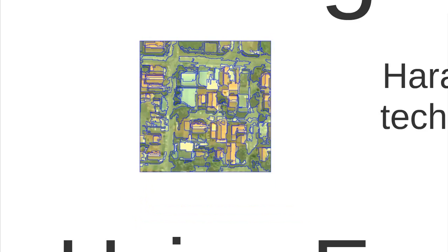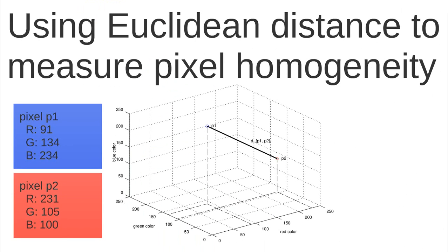And how do we do this using the region growing approach? One of the possible ways to compute the region growing approach is to use the Euclidean distance to measure pixel homogeneity.